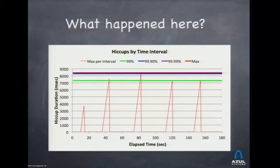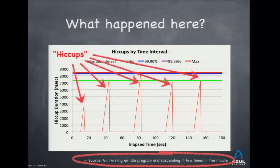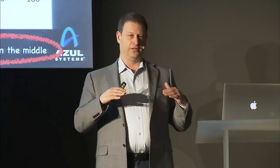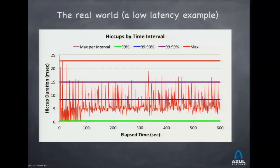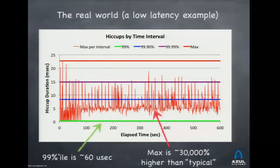Another example of hiccups: here you have very clear, distinct ones. In this artificial system, I hit Control-Z, counted to 10, let it go, and repeated. The reason for the hiccup doesn't matter. In an actual low-latency system, the 99th percentile was 60 microseconds, but these hiccups are 30,000% higher — hundreds of standard deviations away from the mean — dominating the behavior of the system. In every five-second interval there was something really big happening, far, far away from the average.